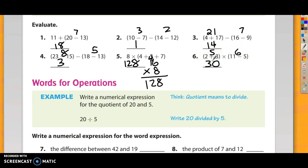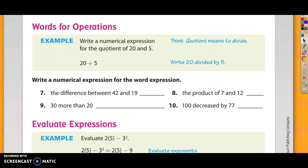Alright, let's move on. The next set is called Words for Operations, and the example is write a numerical expression for the quotient of 20 and 5. What we're trying to do here is not solve 20 divided by 5, we're trying to write it out. And we're practicing our vocabulary. So the directions say write a numerical expression for each word expression. So what that means is write what the math problem is, don't solve it.